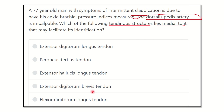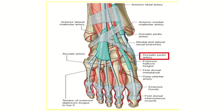Here we can see the anterior tibial artery, and this anterior tibial artery is continuous as the dorsalis pedis artery. So the dorsalis pedis artery arises from the anterior tibial artery. Here we can see different structures present at the ankle joint.